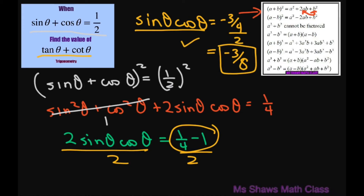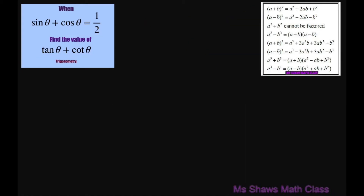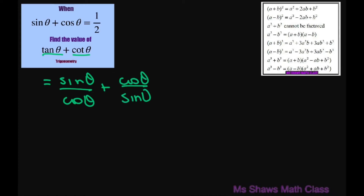Now let's find tan theta plus cot theta. We'll break it up: tangent equals sine of theta divided by cosine of theta, and cotangent is cosine of theta divided by sine of theta. The common denominator is cosine of theta times sine of theta.